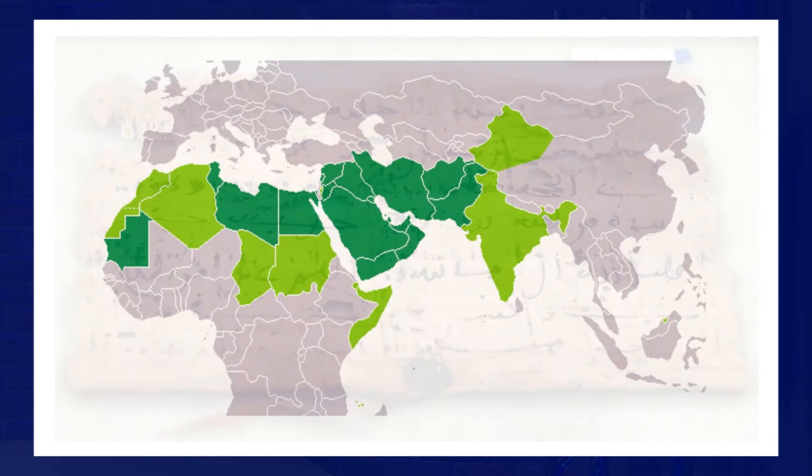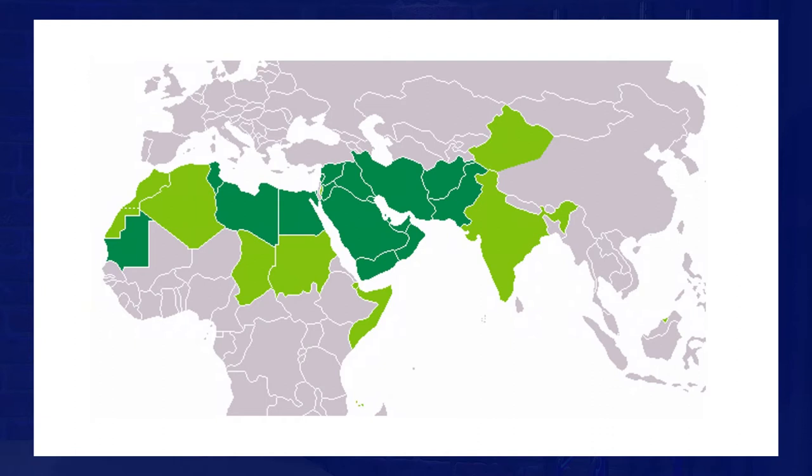Since its inception, the Arabic alphabet has spread rapidly throughout the world as it was often adopted by societies converted to Islam. As a result, it has also been used for languages that have very little in common with the Arabic language.